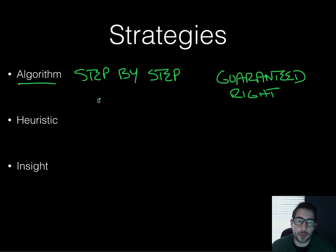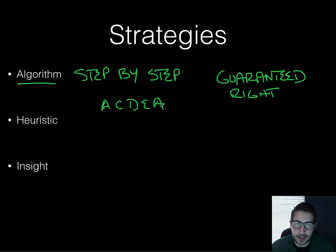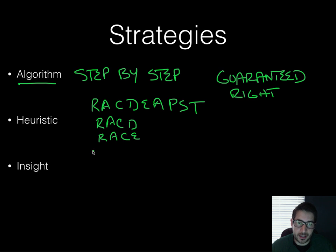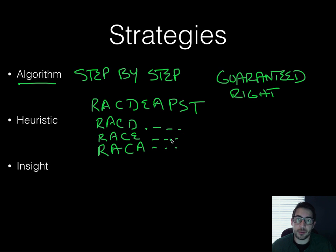If I ask you to rearrange a certain set of letters to make a word — say A, C, D, E, P, S, T, R — you might start: R first, A second, C third, then rearrange. R first, A second, C, then start with E. Start with D, R first, A second, C third, then put A third. We just keep trying them all out until we figure it out. So it's step by step, you're guaranteed the right answer. This algorithm is what a computer uses — it goes step by step to figure something out.